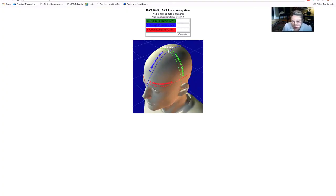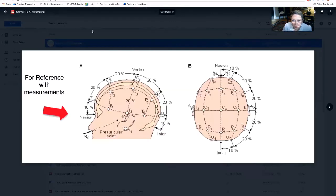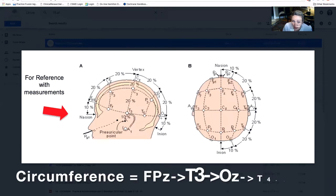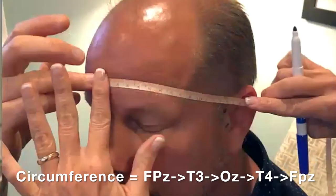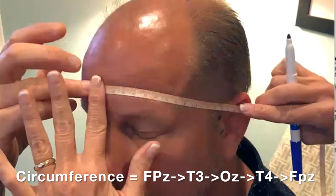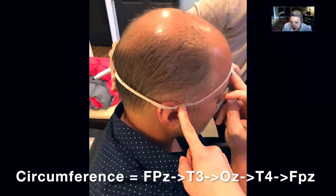The third measurement required is your circumference on the web-based interface. You have already made your marks of FPZ, T3, OZ, and on the opposite side T4. With your assistant and often a hand of the patient, you can use your soft measuring tape and line up your points — FPZ, T3 on the left, OZ in the back, and T4 on the right — to get your circumference.